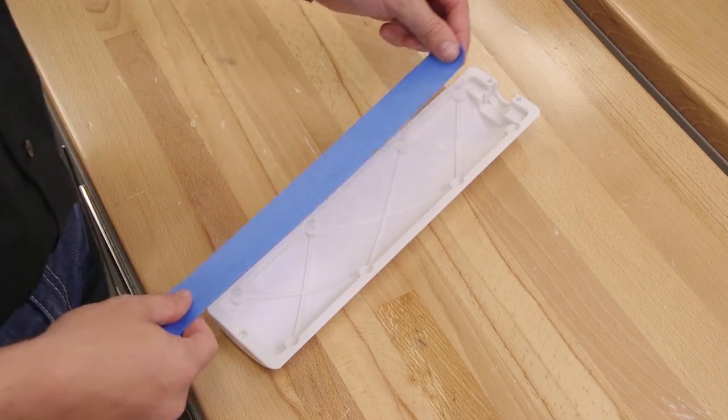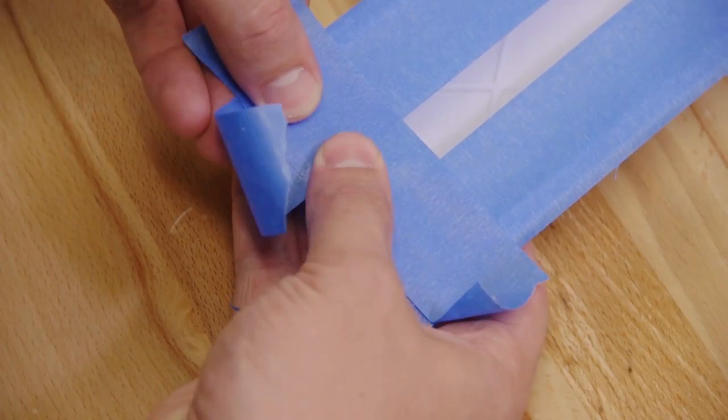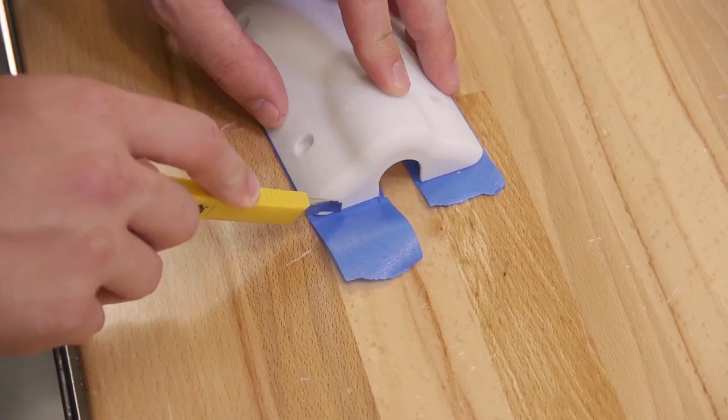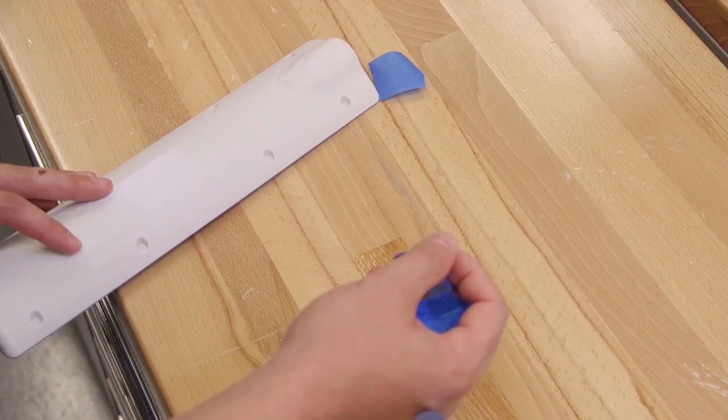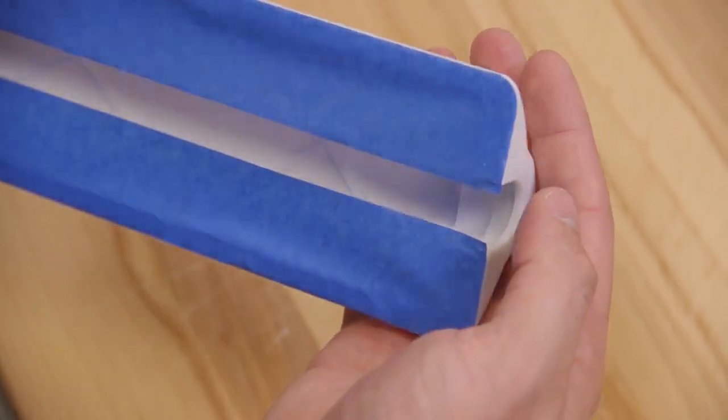First, prepare the part. Mask the areas of the part where a media blasted surface is undesirable. Masked areas may include parting surfaces of tools or sharp outside corners that could be rounded by media blasting.